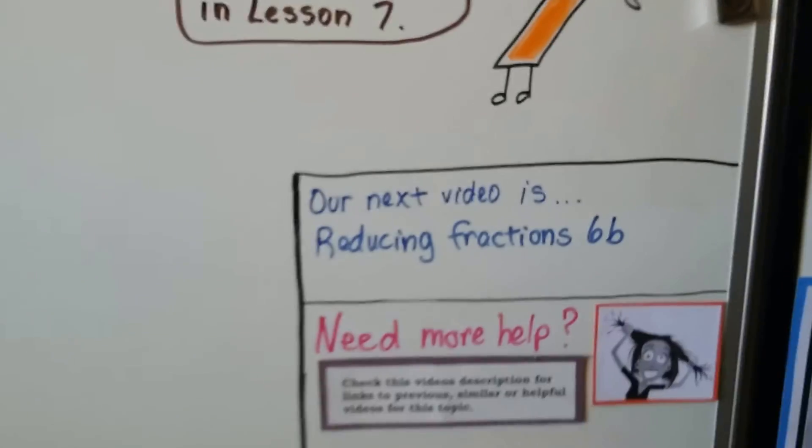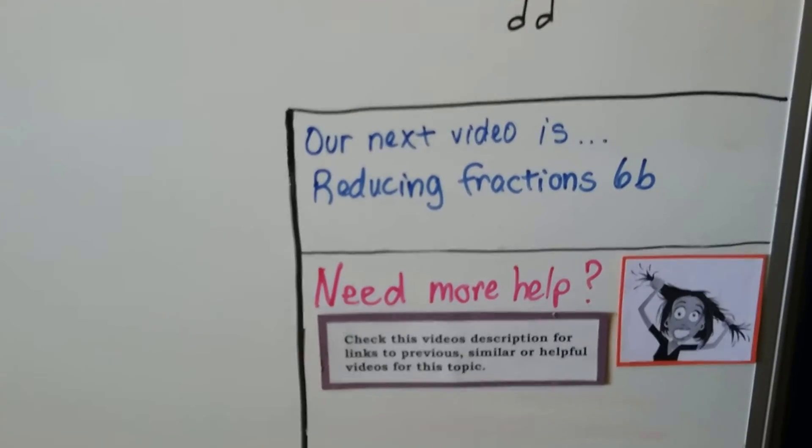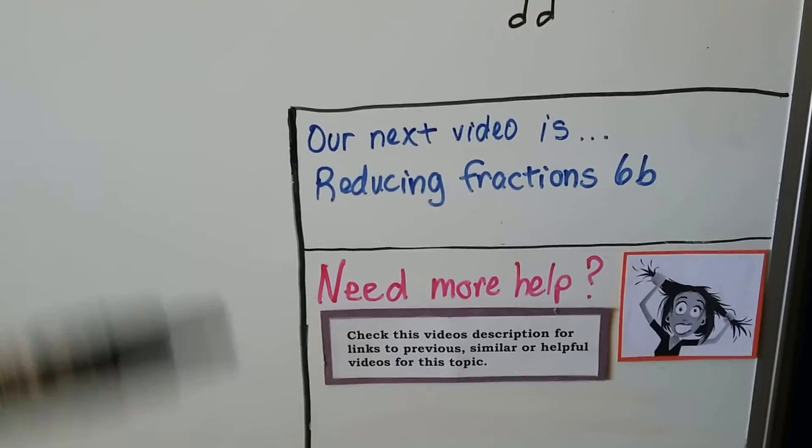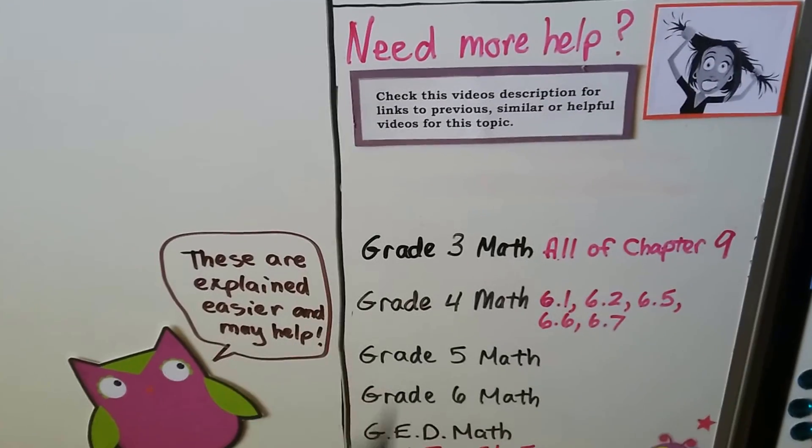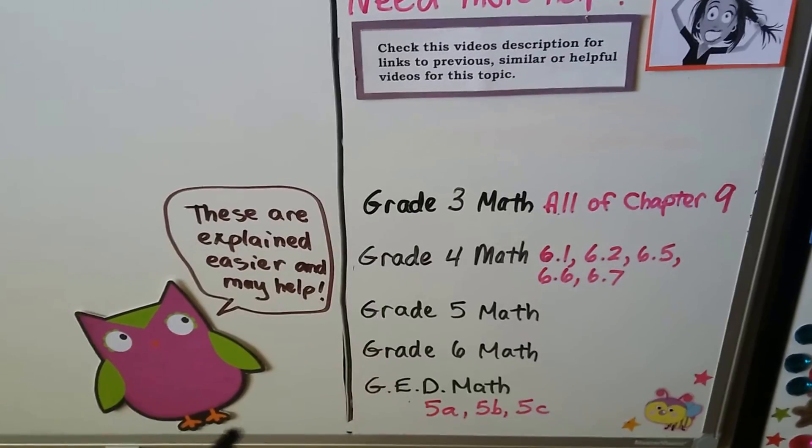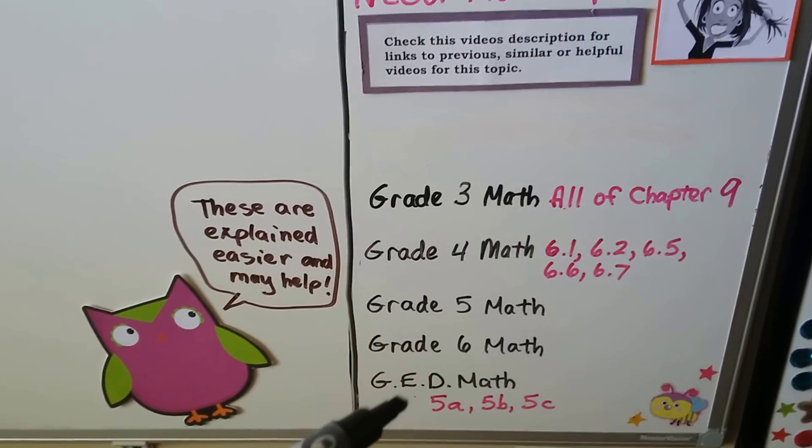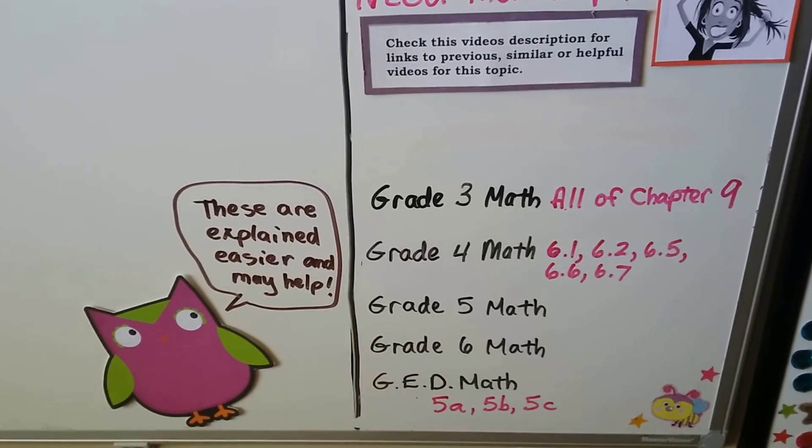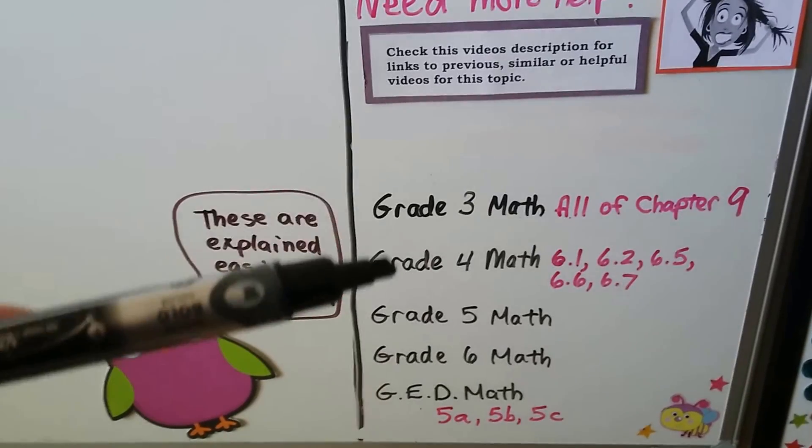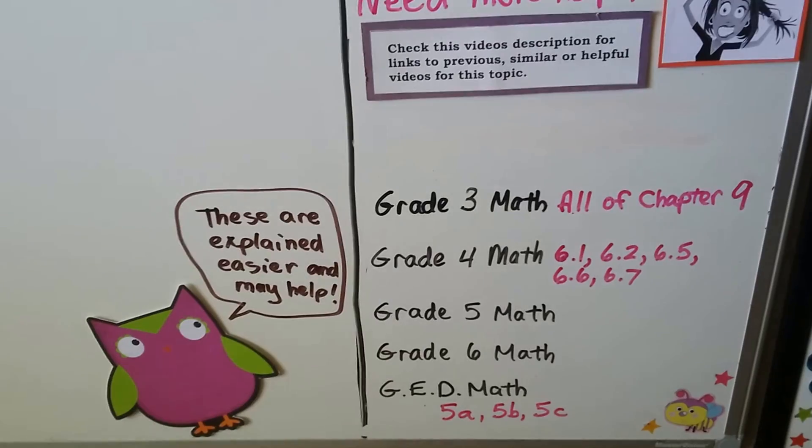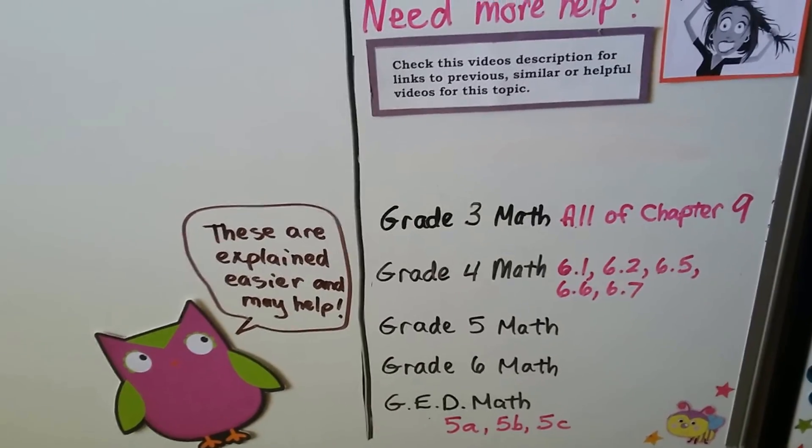Our next video is reducing fractions. It's going to be 6b. We're going to take a fraction and reduce it to its lowest value. If you need more help, you can click on this video's description and there's going to be links to all these helpful videos. Hopefully you're watching every single video in this GED math playlist. If you're really confused, all you have to do is watch the lower grade level videos because they might be explained a lot easier.